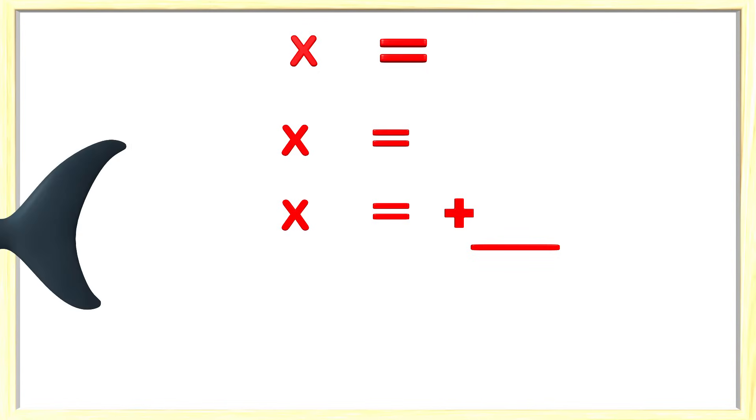It looks like the sharks want us to try another problem. Here we have 8 times 6. Let's break apart the first factor, the number 8. There are several ways to break apart 8, but I want to use 5 plus 3 because I know my 5 times tables. We now need to multiply 6 by both the 5 and 3.